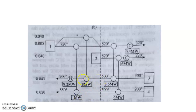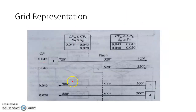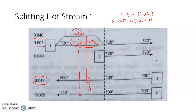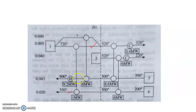Total above-pinch requirement of 17.2 MW is met: cold stream requirements are ticked off, and the remaining hot utility equals 9.2 MW, consistent with the PTA result. This completes the heat exchanger network above the pinch.